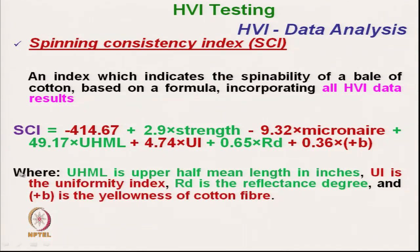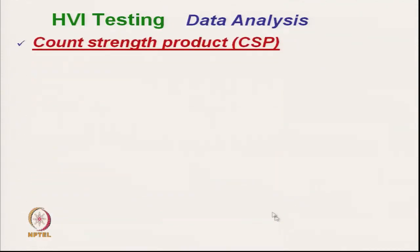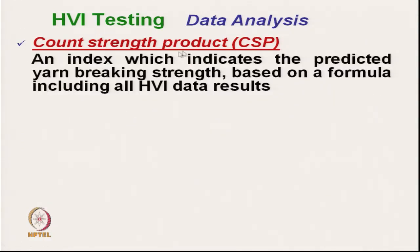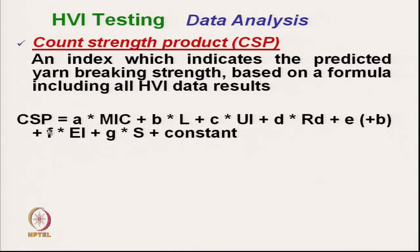The instrument can also predict the CSP — Count Strength Product — from the fibre data. This is an index indicating the predicted yarn breaking strength based on a formula using the HVI values. Taking all HVI values such as micronaire and strength together, we can obtain the CSP value.